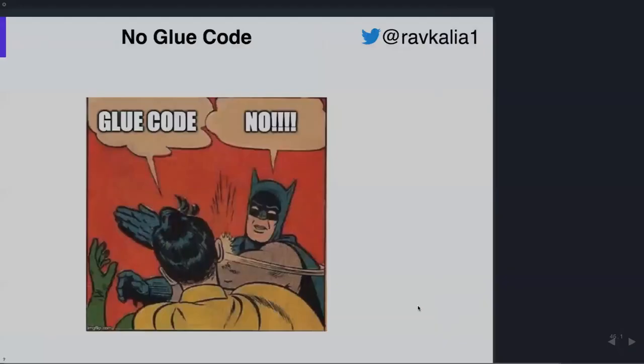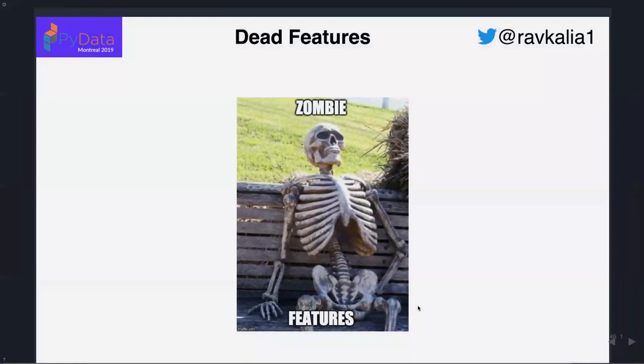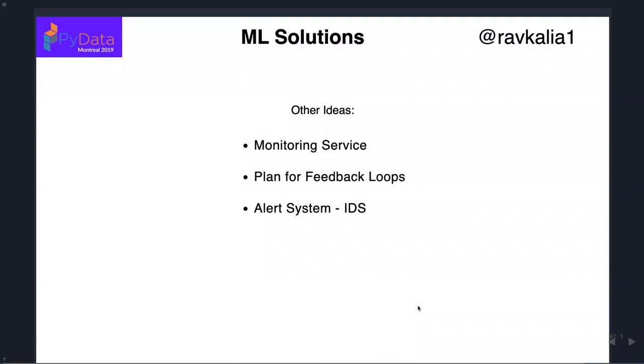Dead features: you've got a set of features and then another feature comes in, slightly moved, slightly off by a little. We keep the original features but have a copy of them effectively added on. Then at some point someone will just pull that out and it causes problems. There needs to be good pruning and removal of features that are no longer used. Some other ideas: a monitoring service, making plans for feedback loops as and when they occur, maybe having an alert system to say something's going wrong — something like an intrusion detection system to flag that features or responses coming through are not normal.